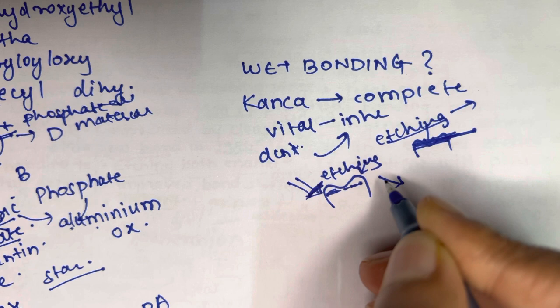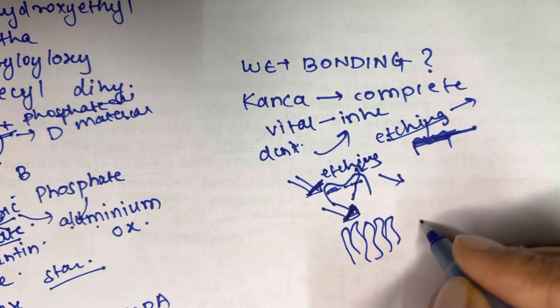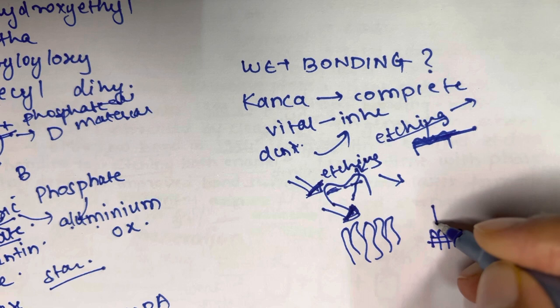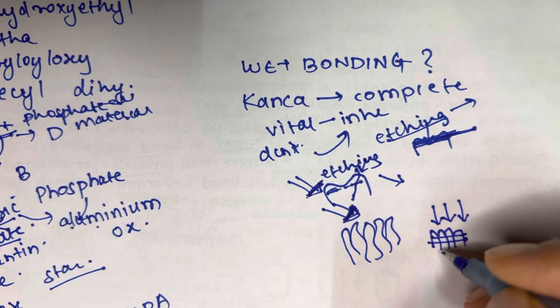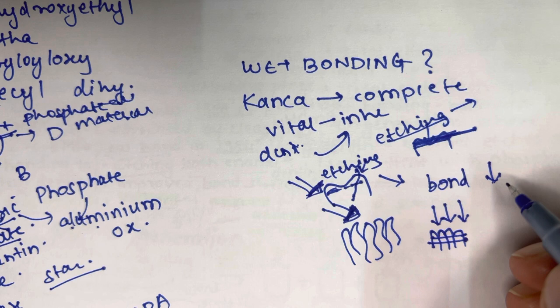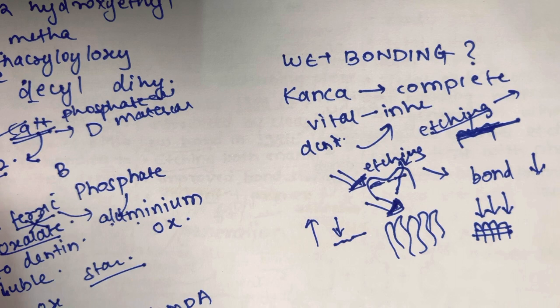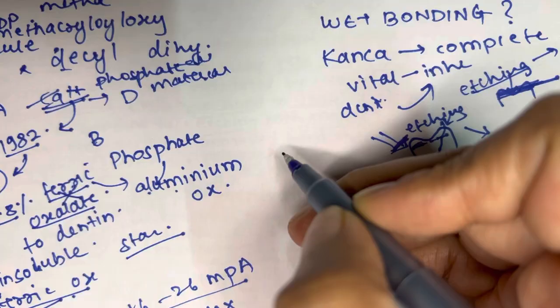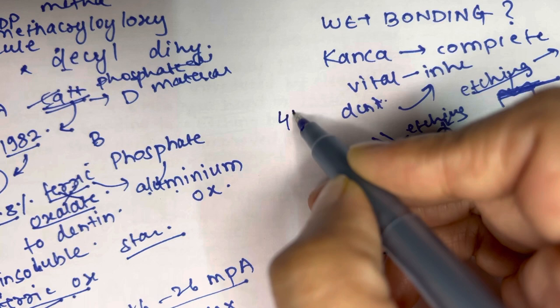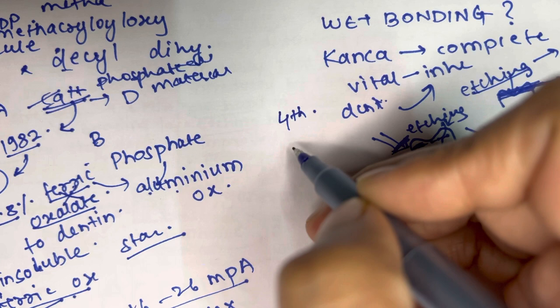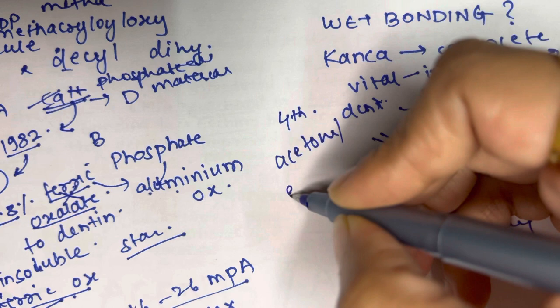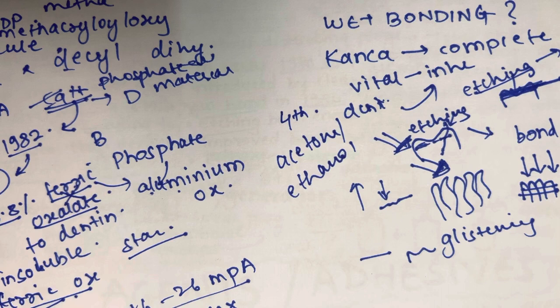If you completely air-dry the tooth after etching, the dentinal collagen will collapse. When collagen collapses, the monomer applied later will not penetrate properly into the dentinal tubules and the bond strength will be reduced. The surface should not be too moist either, because excessive moisture will dilute the primer and make it less effective. The use of etch-and-rinse adhesive on moist dentine was made possible by incorporating acetone or ethanol into the primer or adhesive.